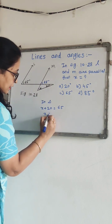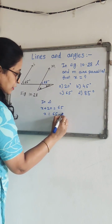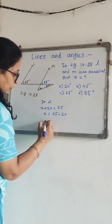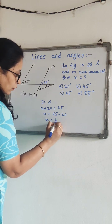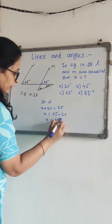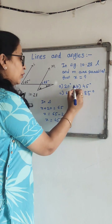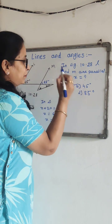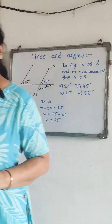So X is equal to 65 minus 20, which gives X equal to 45 degrees. Our answer is option B.